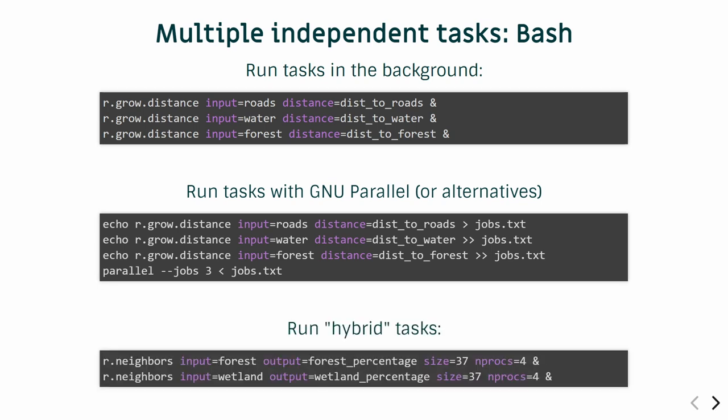You can also combine workflow-level parallelization with tool-level parallelization. For example, you can call r.neighbors as separate background processes, but each of them is actually running four threads — so eight of your cores should be busy. You just have to be careful not to oversubscribe, although it's typically not a huge issue.